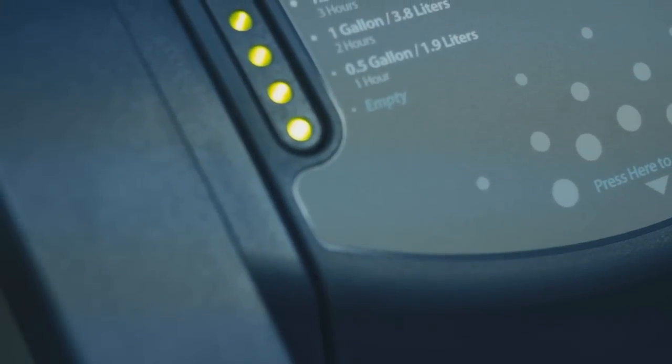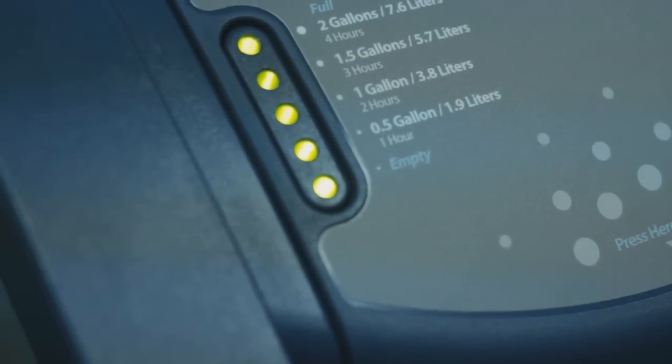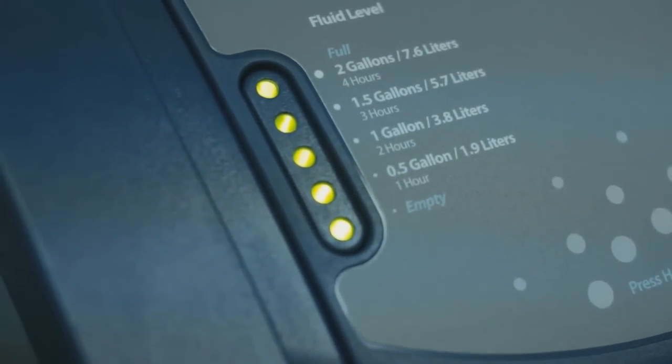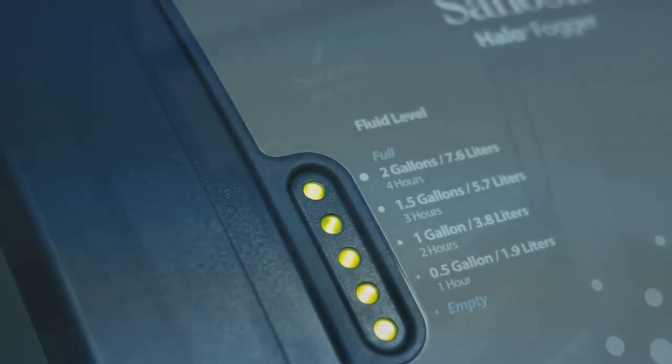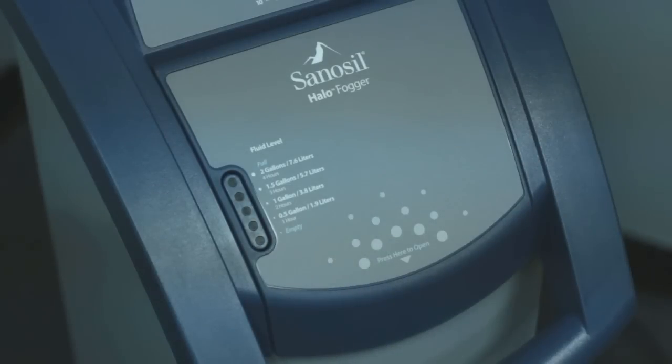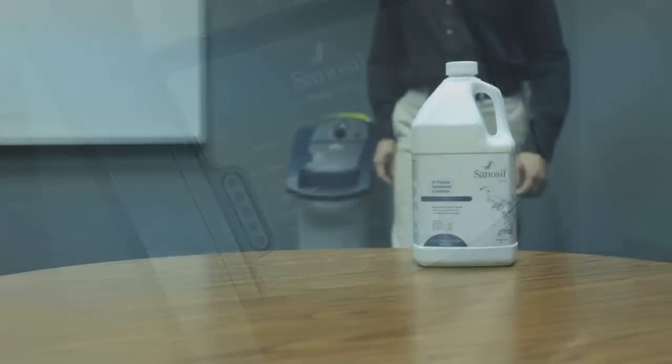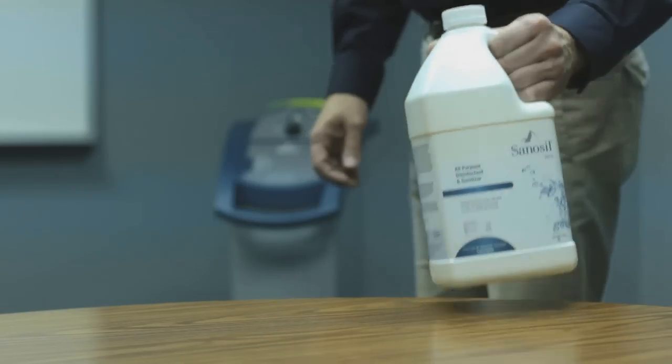The fluid indicator lights will also illuminate to let you know the level of fluid in the reservoir and if you need to add more Sanosil disinfectant. The easy to read fluid level indicator will show one red flashing light if the reservoir is empty. Use only Sanosil disinfectant in the Halo unit. Do not dilute.